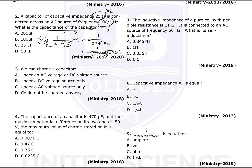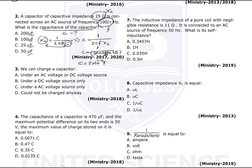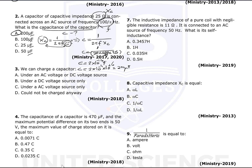Using the calculator: 1 divided by (2 × 100 × 25) gives 2 × 10⁻⁴ farad. Since the answer choices are in microfarad, we multiply by 10⁶, giving 2 × 10² = 200 microfarad. So 200 microfarad is the correct answer.